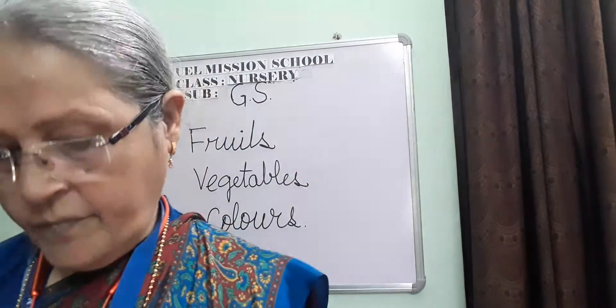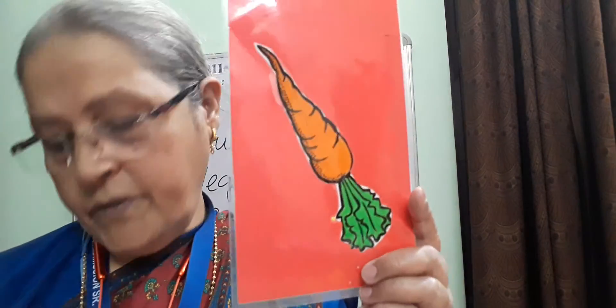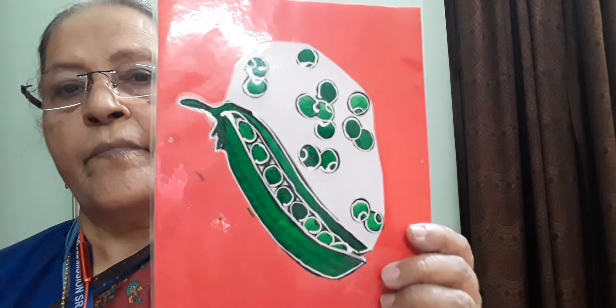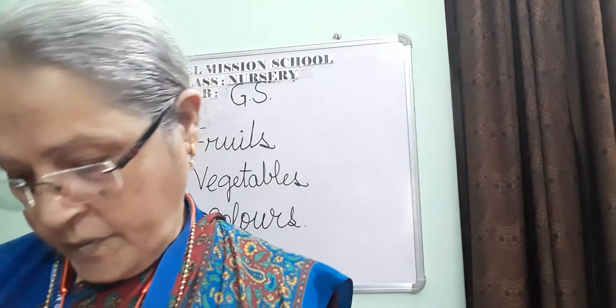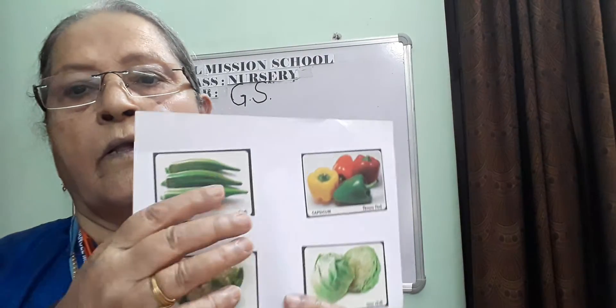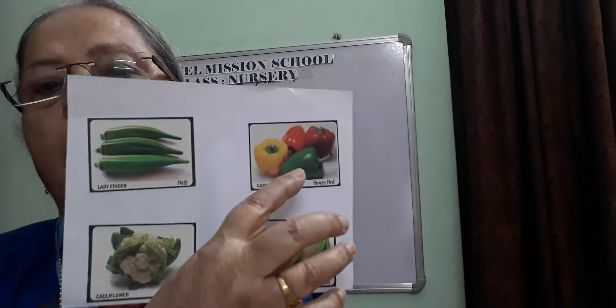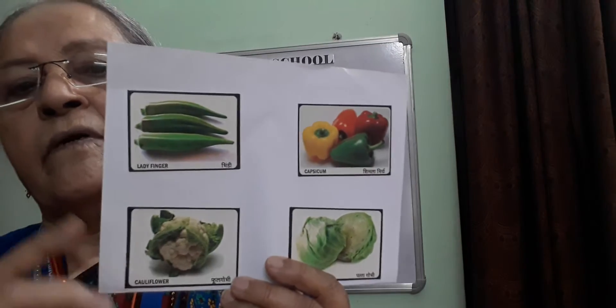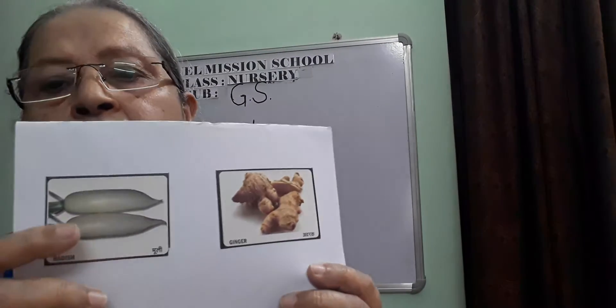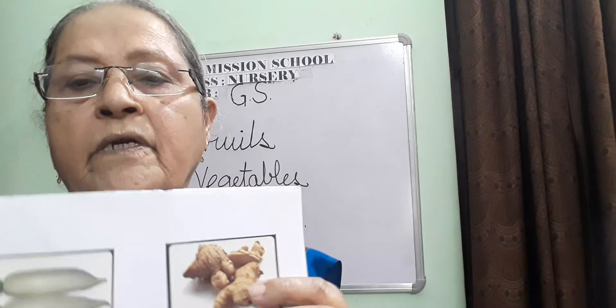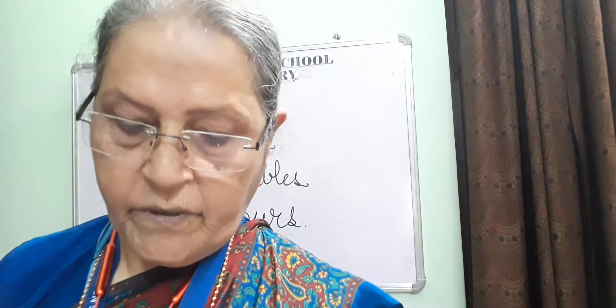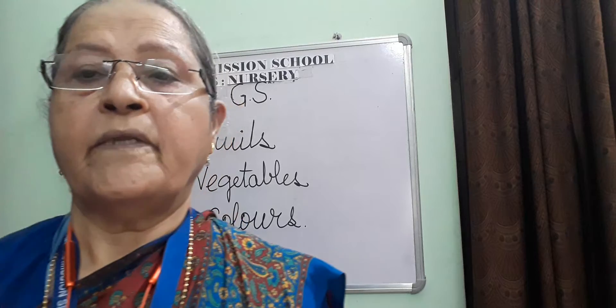Potato, tomato, carrot, peas, turnip, cabbage, ladies finger, capsicum, cauliflower, radish, and ginger. There are a lot of vegetables that we eat.